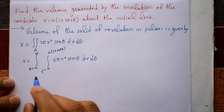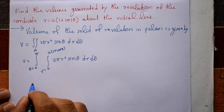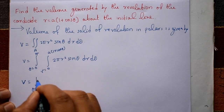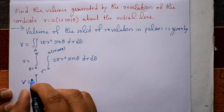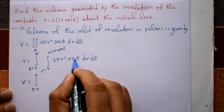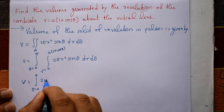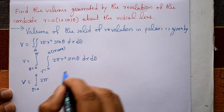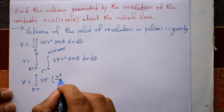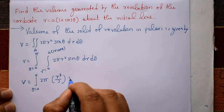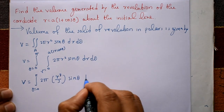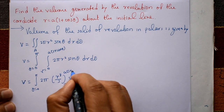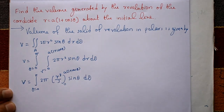First we integrate with respect to r. V = ∫₀^π 2π sinθ · [r³/3] from 0 to a(1 + cosθ) dθ. Since sinθ is constant with respect to r, we get 2π sinθ · (r³/3) evaluated from the lower limit 0 to upper limit a(1 + cosθ).